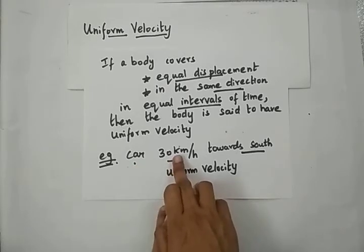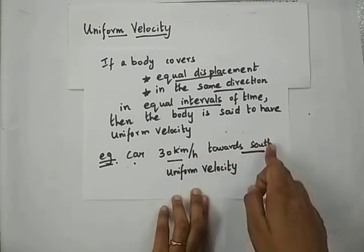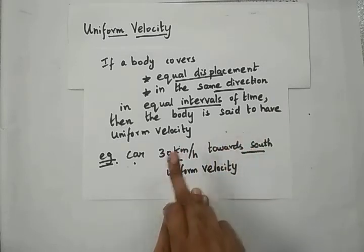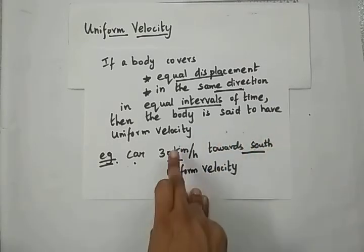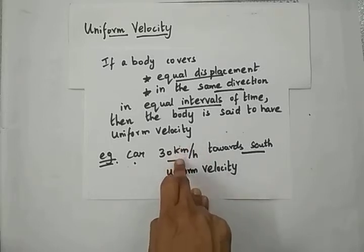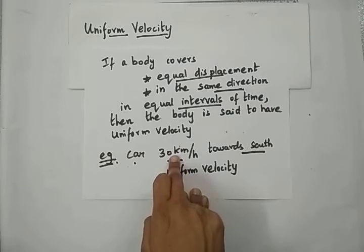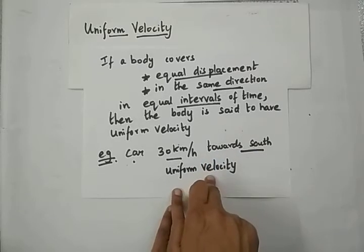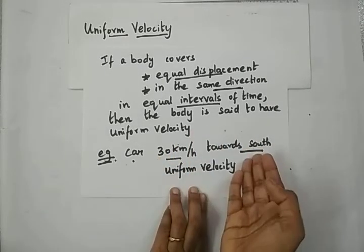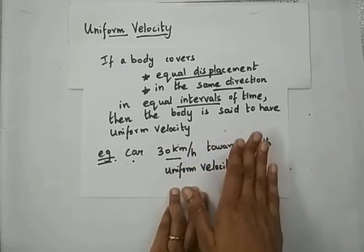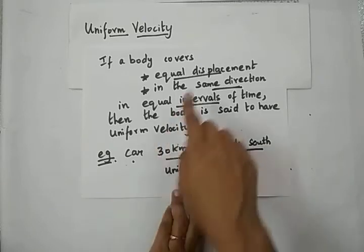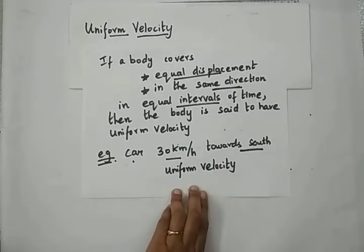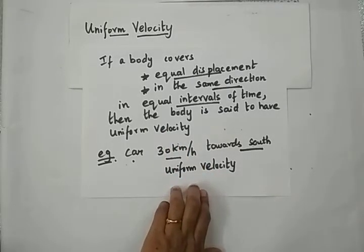For example, if a car is traveling at 30 kilometers per hour towards south, with no change in direction — following the same straight line towards south — and for every one hour covers 30 kilometers, then the car is said to have uniform velocity. But is it practically possible on road? No, you cannot maintain the same speed or the same direction. Still, a body covering equal displacement in the same direction in equal intervals of time is said to move with uniform velocity.